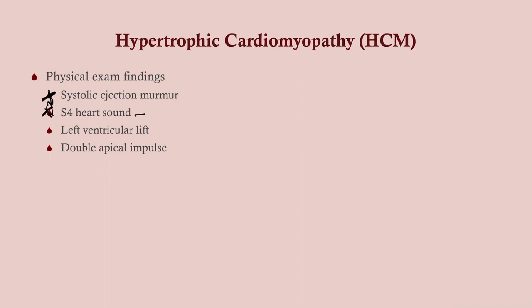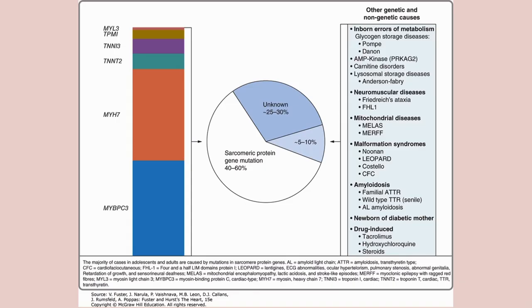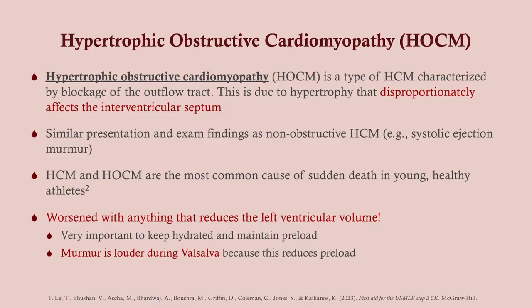Physical exam findings include a systolic ejection murmur and an S4 heart sound — the most commonly tested findings. The S4 heart sound occurs because you're pumping against a very stiff ventricle. Hypertrophic obstructive cardiomyopathy has the exact same clinical presentation as non-obstructive HCM; the only way to differentiate them is on echo. With HOCM, you have not only thickening of the myocardium but also a blockage, making it hard for blood to get out of the left ventricle into the aorta, because the interventricular septum is disproportionately affected.